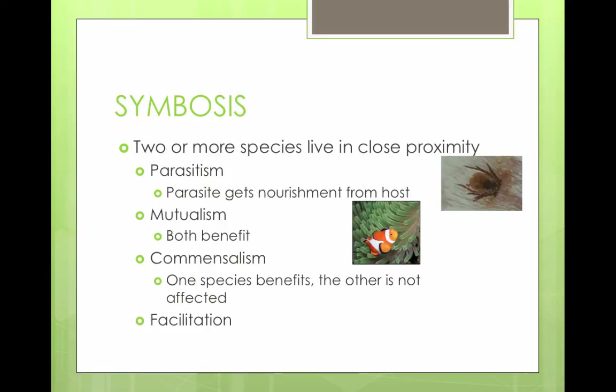Mutualism is when both species living together in the relationship benefit. Obligate mutualism is when one species can't survive without the other. For example, we need E. coli in our gut in order to survive.